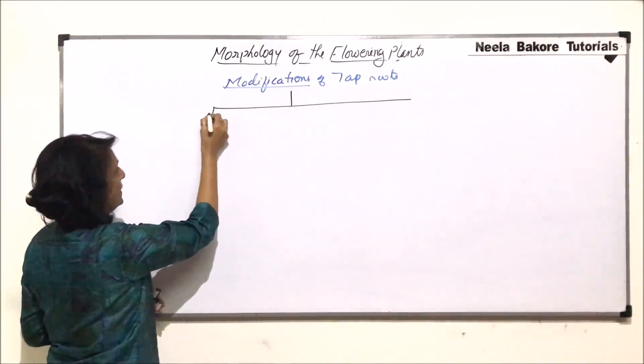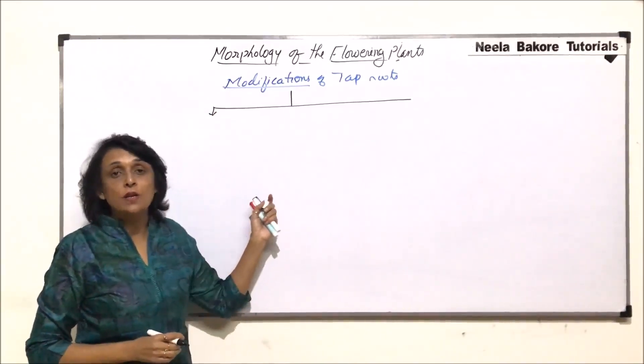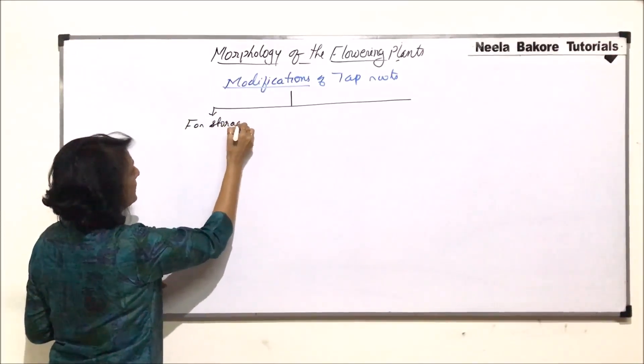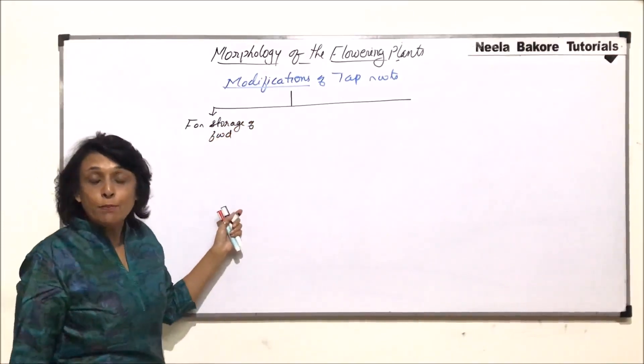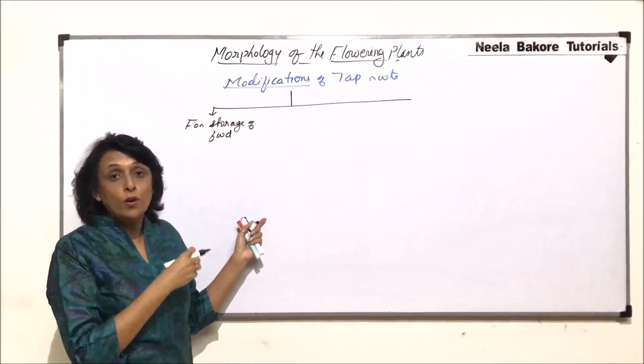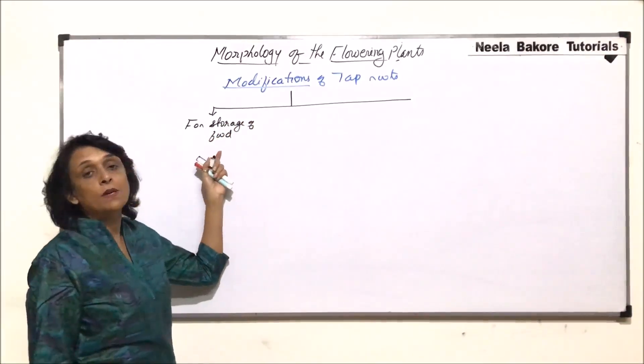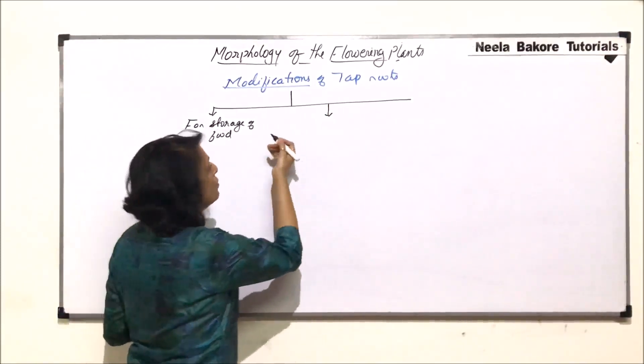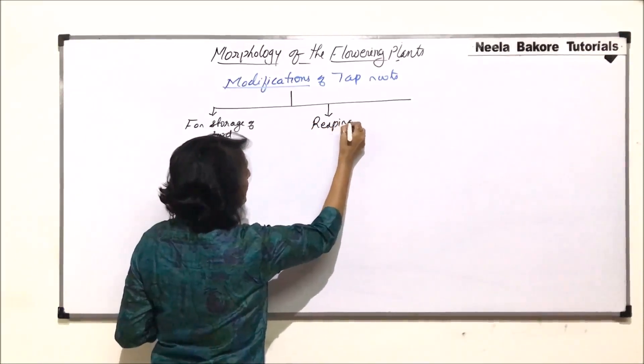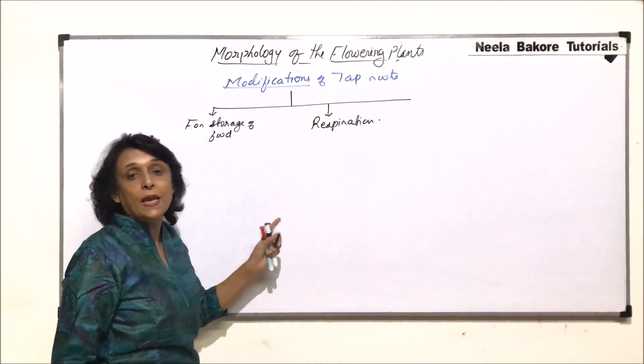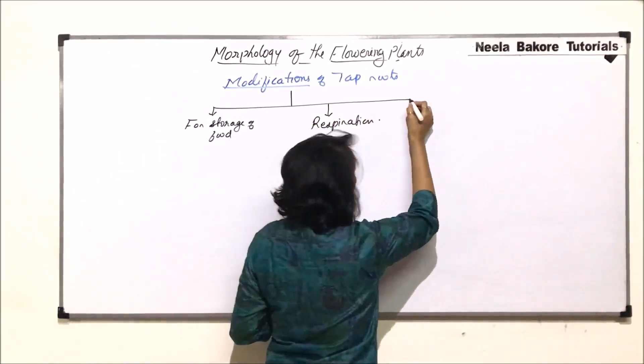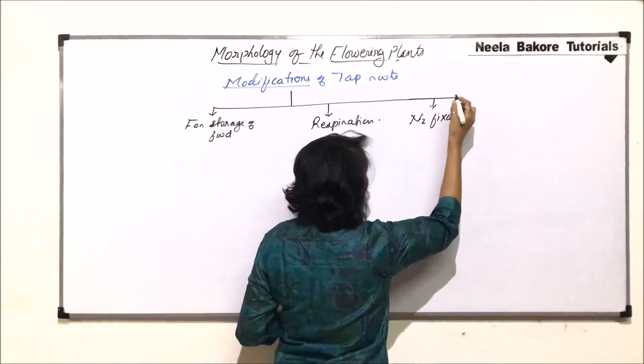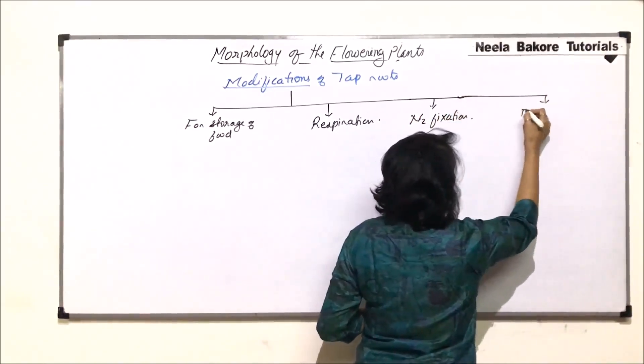Why are these roots modified? Other than the normal function, what is that additional function these roots perform? One is for storage of food. If tap root is modified for storing food, which is an additional function, then we will keep it under modification. The second reason for getting modified or doing an extra function could be respiration. These roots would help in respiration as an extra function. The third modification is for nitrogen fixation. And the last one is for reproduction.